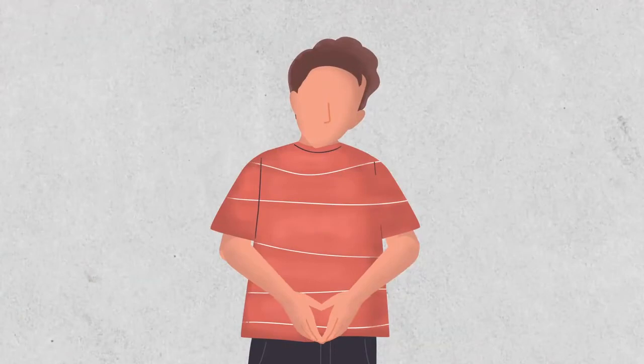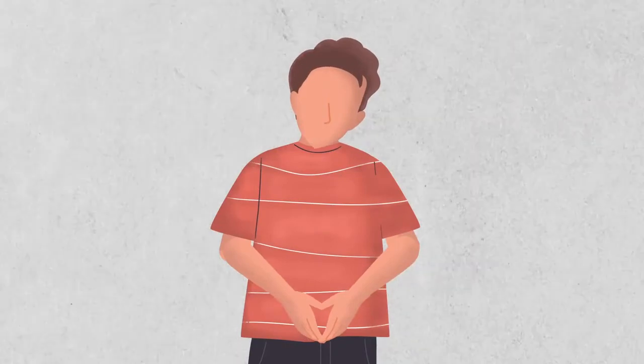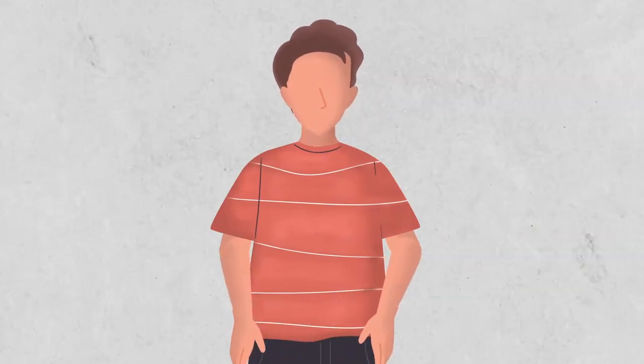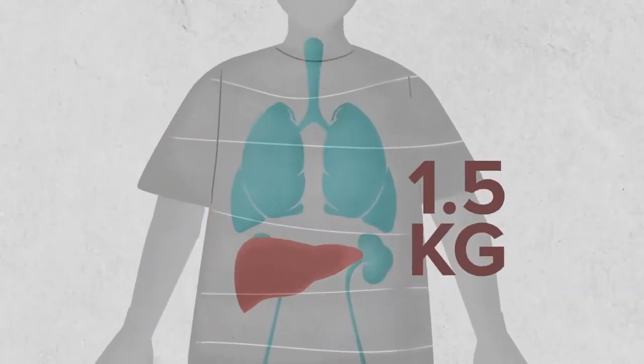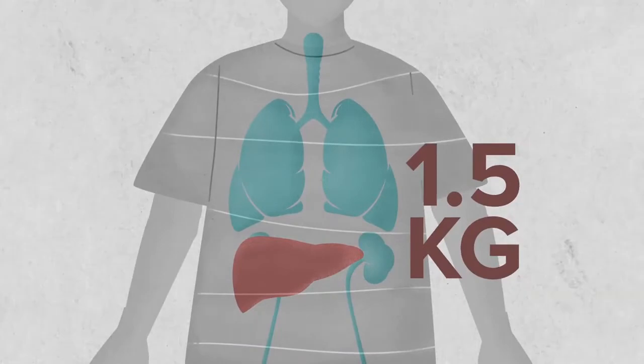The liver is a very important organ of the body. It is the largest organ inside the body that sits in the upper right abdomen area and weighs around 1.5 kilogram in a normal adult.